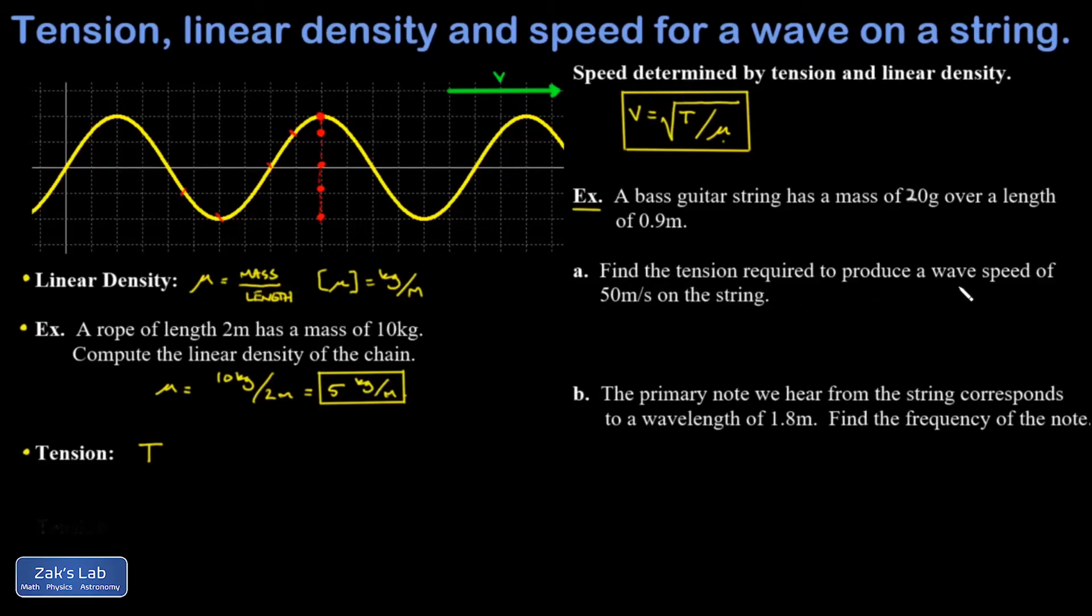And in part a, I want the tension required to produce a given wave speed of 50 meters per second on the string. So in other words, I'm taking our wave speed equation in terms of tension and linear density, and then solving that for T. I'm going to go ahead and get the linear density first. And I have a mass of 0.020 kilograms, just making sure my units are correct, over a length of 0.9 meters. And when I run the numbers on this, I get a linear density of 0.0222 kilograms per meter.